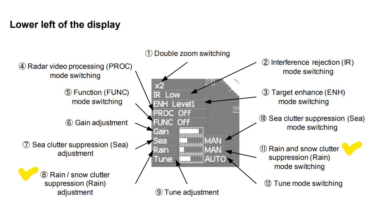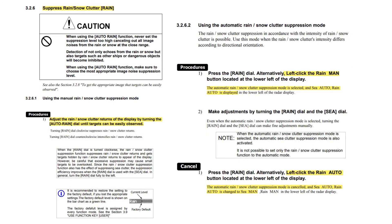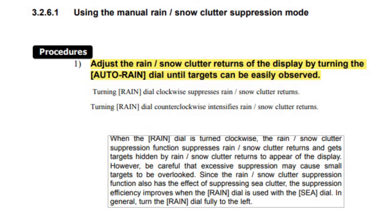Rain/snow clutter suppression adjustment: when the RAIN dial is turned clockwise, the rain/snow clutter suppression function suppresses rain/snow clutter returns and gets targets hidden by rain/snow clutter to appear on the display. Be careful that excessive suppression may cause small targets to be overlooked. Since the rain/snow clutter suppression function also has the effect of suppressing sea clutter, suppression efficiency improves when the RAIN dial is used together with the SEA dial. In general, turn the RAIN dial fully to the left.